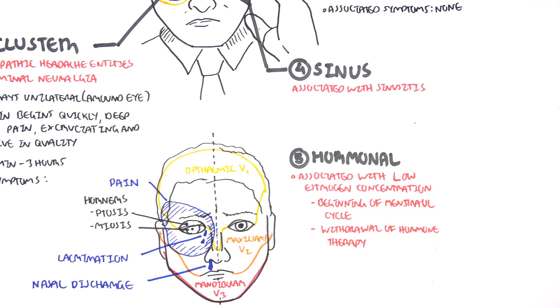Those were the five types of headaches: primary headaches, migraine, tension, cluster, sinus, and hormonal. Now let us look at the drugs used, the common or main drugs used to treat each of these headaches, beginning with the migraine.